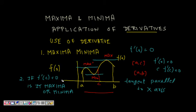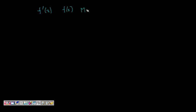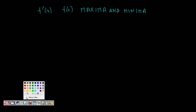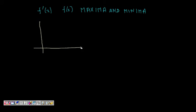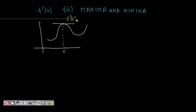We need to find out the relation between the derivative and f(x) maxima and minima. Let's try to see it for a very small graph. At this point, f'(c) is zero. Now is it maxima or minima? How do we find out?